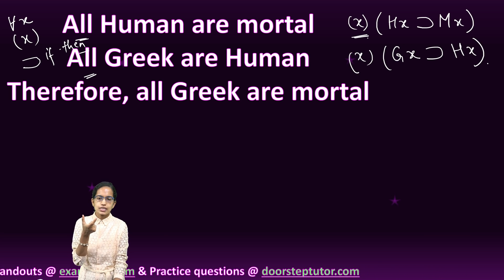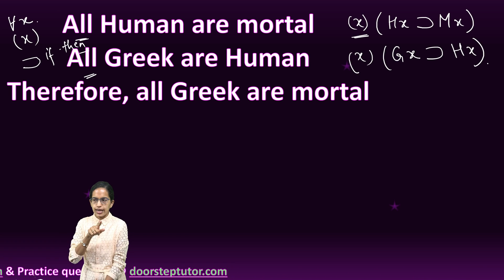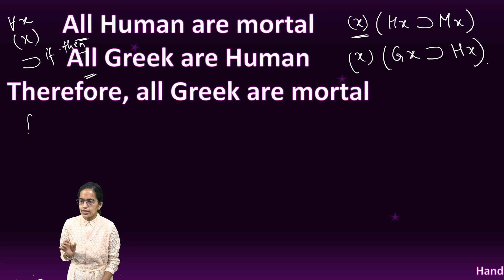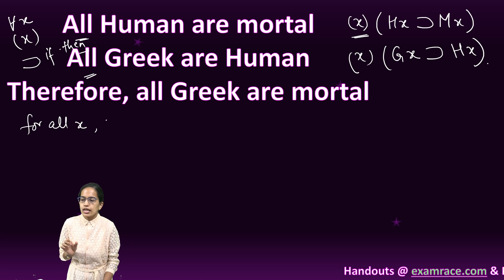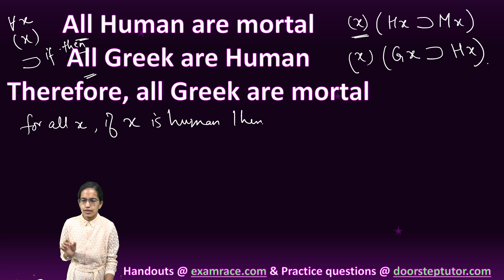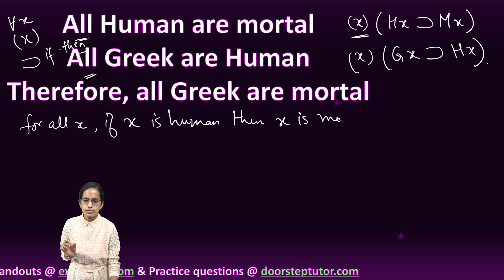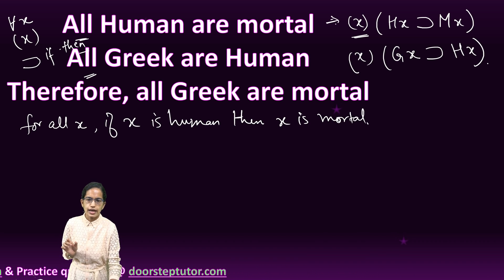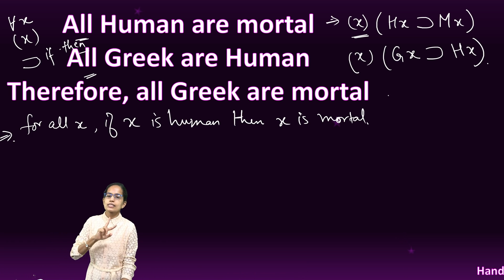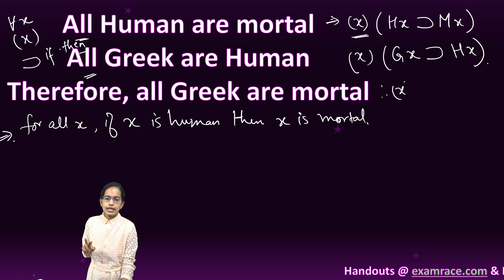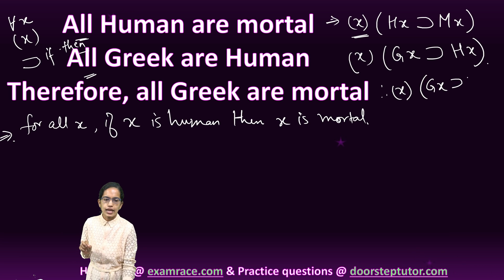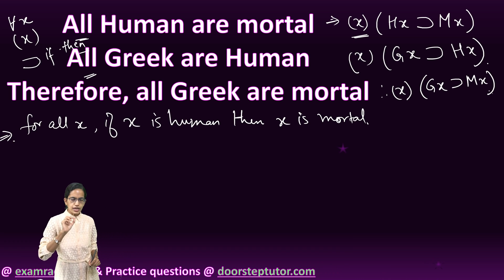I read the first statement again for clarity. I can write it as either inverted-A x or x in brackets. I read it as: for all x, if x is human, then x is mortal. Based on these two formulas, the conclusion I can state is: for all x, if x is Greek, then x is mortal. This is my conclusion.